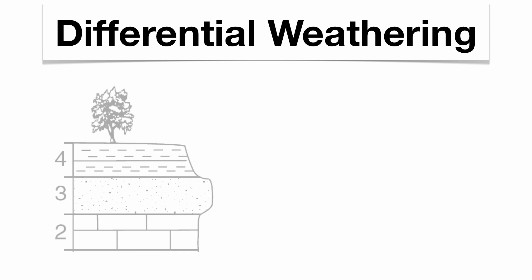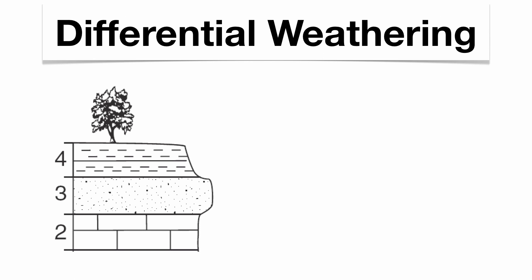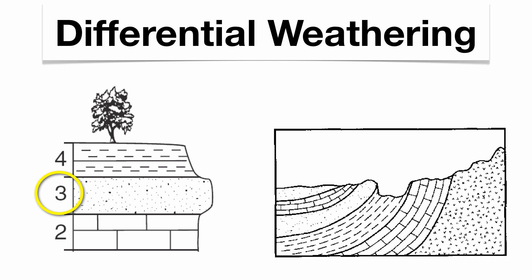Differential weathering is important to identify on a Regents exam. In the picture on the left-hand side, rock layer 3 is more resistant because it sticks out a little bit farther. On the right, the shale layer is less resistant because it has been eaten away more.